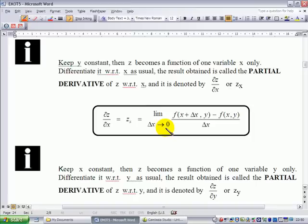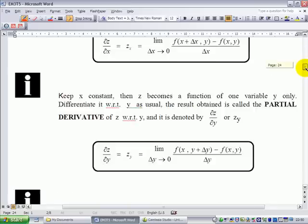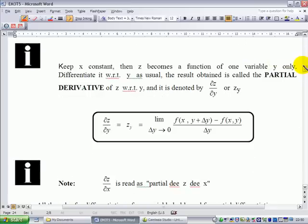Similarly, if you want to find partial dz/dy, in this case you keep x constant, then z will become a function of one variable y only. Therefore you can differentiate it with respect to y as usual. The result obtained is called the partial derivative of z with respect to y and it is denoted by ∂z/∂y or z_y.